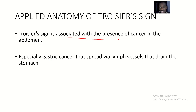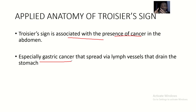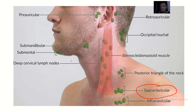To recap: Troisier's sign is associated with the presence of cancer in the abdomen, especially gastric cancer that spreads via lymph vessels that drain the stomach. These lymph vessels go through the thoracic duct, up into the left supraclavicular lymph nodes, causing them to enlarge. That's the applied anatomy of the Troisier's sign and what causes the left supraclavicular lymph node enlargement.